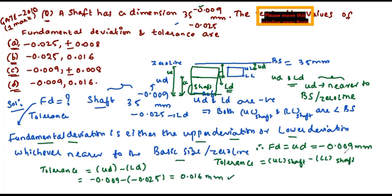So fundamental deviation is minus 0.009 mm and tolerance is 0.016 mm. As per the options, option B is the correct answer.